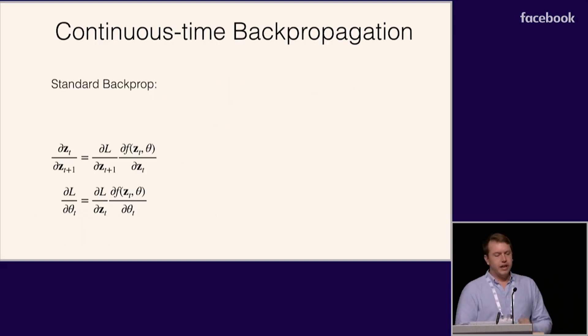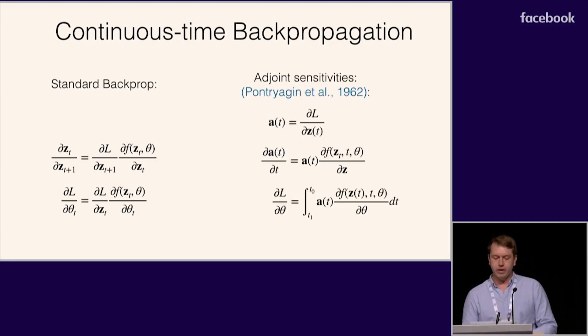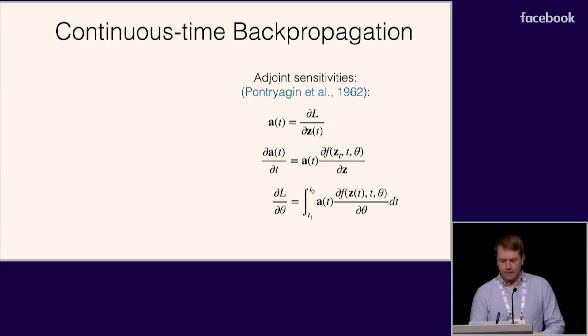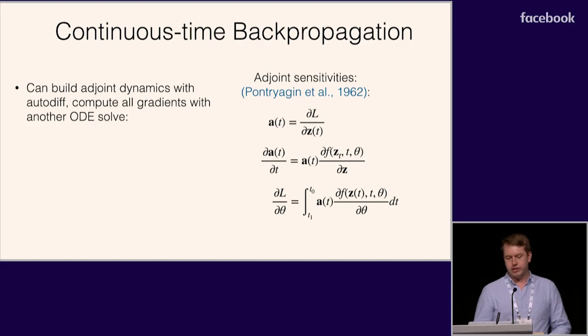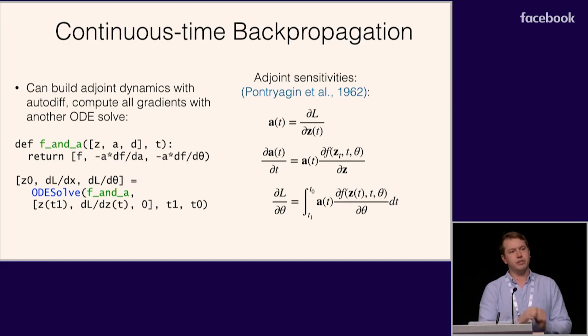So how can we take the exact derivative through an ODE solution? Well, on the left, we have the standard reverse mode chain rule for a neural network. And if we take the continuous time limit of these equations, we recover the adjoint sensitivity equations, which were actually developed in the 60s. We can use automatic differentiation to define these adjoint dynamics and then integrate them backwards in time using another call to an ODE solver. So we're using automatic differentiation to do this automatically for any differentiable function.